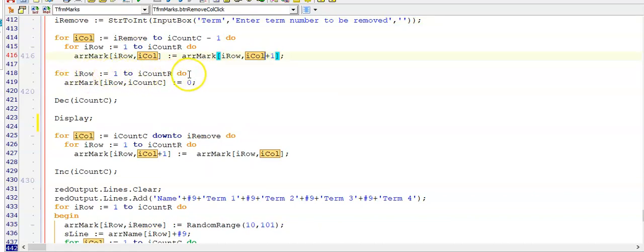Then for this last column here, that is still iCountC. That would still be the last item. I'm just changing them all to 0. I now have one column less. So I am decreasing this iCountC variable. And I was asked to display the two-dimensional array at this point in my string grid. So I can use my display procedure.